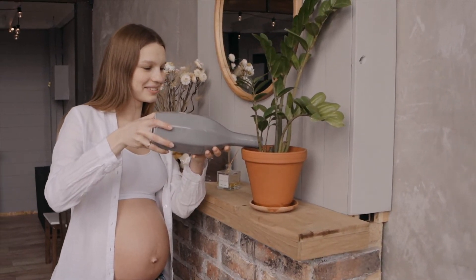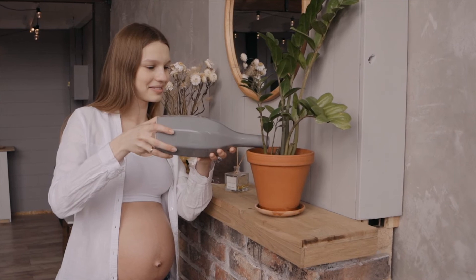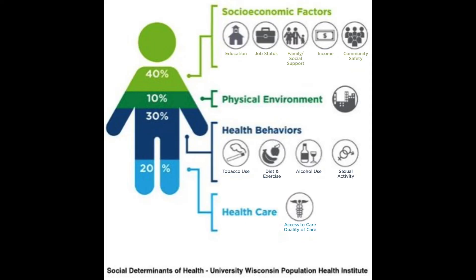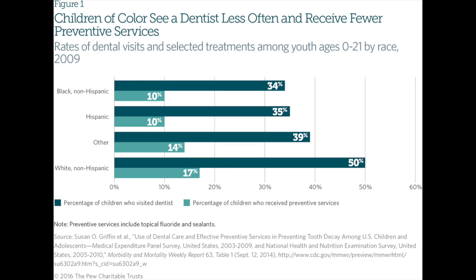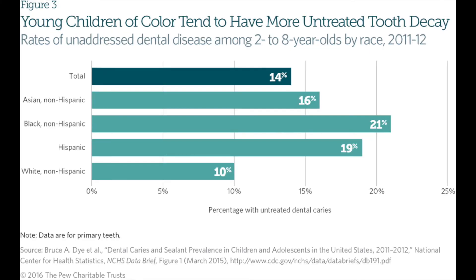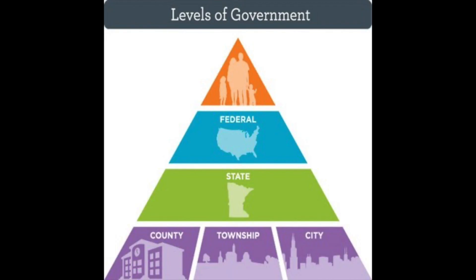When looking at some statistics, we see that children of color are less likely than white children to visit a dentist and receive preventative care such as fluoride treatments or sealants. In fact, only 10 percent of Hispanic and Black children received preventative services in 2009, compared with 17 percent of white children. There are similar statistics for groups more likely to suffer from untreated tooth decay. As a result, there is a critical need for interventions at the local, state, and national levels to address accessibility to oral health and create affordable oral health care coverage for everyone.